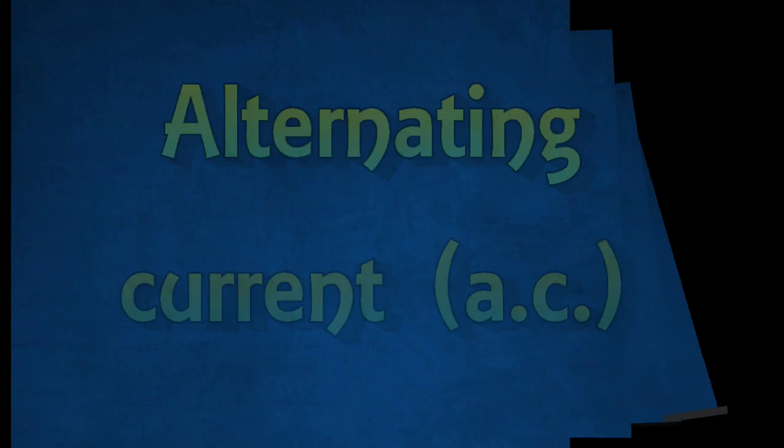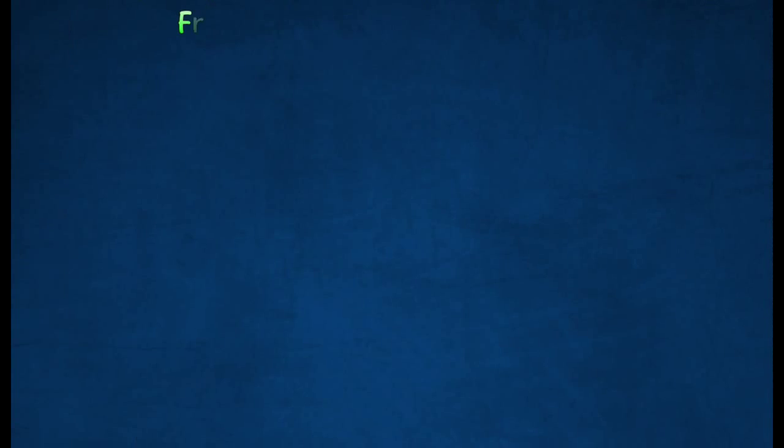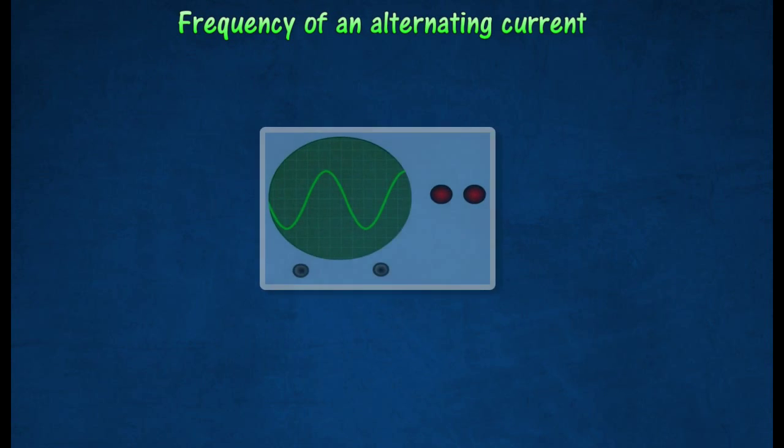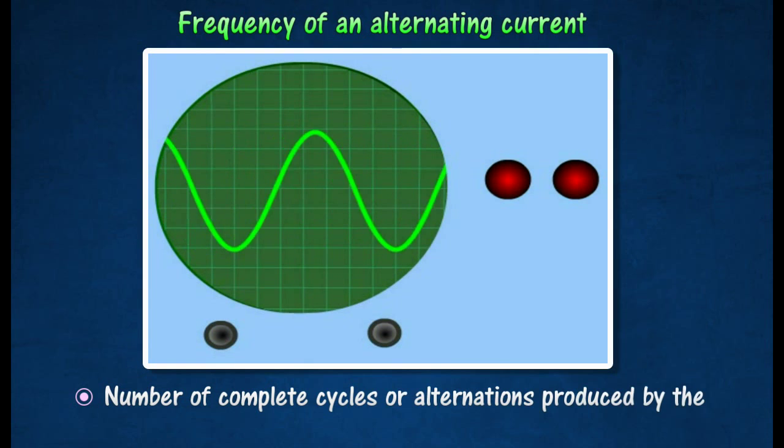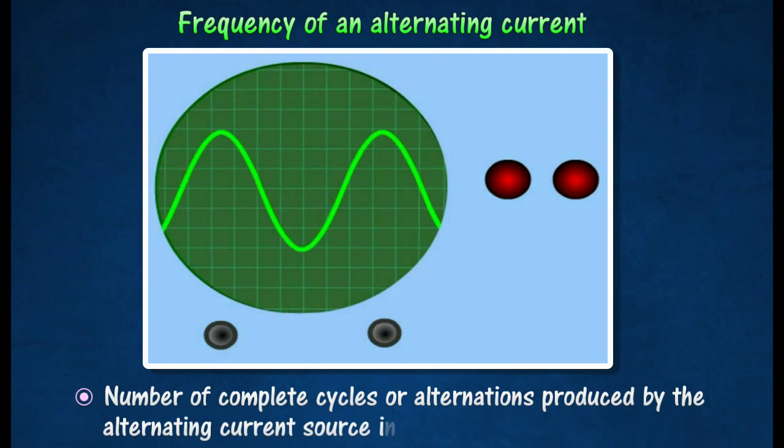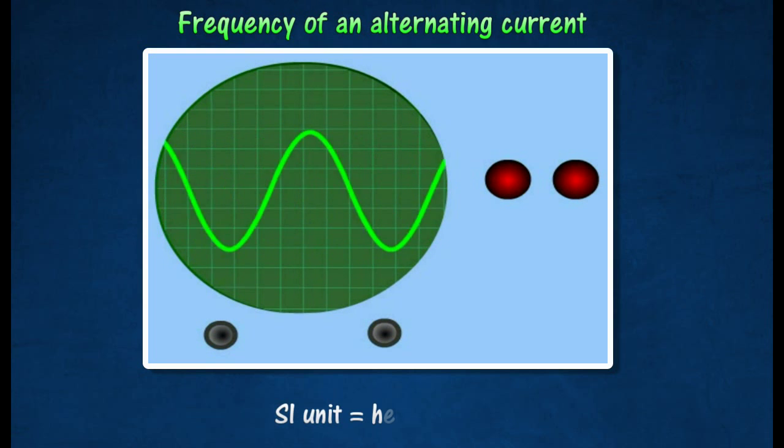The frequency of an alternating current is the number of complete cycles or alternations produced by the alternating current source in one second. The unit of frequency is the Hertz. One Hertz is equal to one cycle per second.